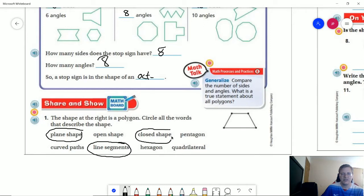It's a closed shape. And we have one, two, three, four sides. And so that would be a quadrilateral.